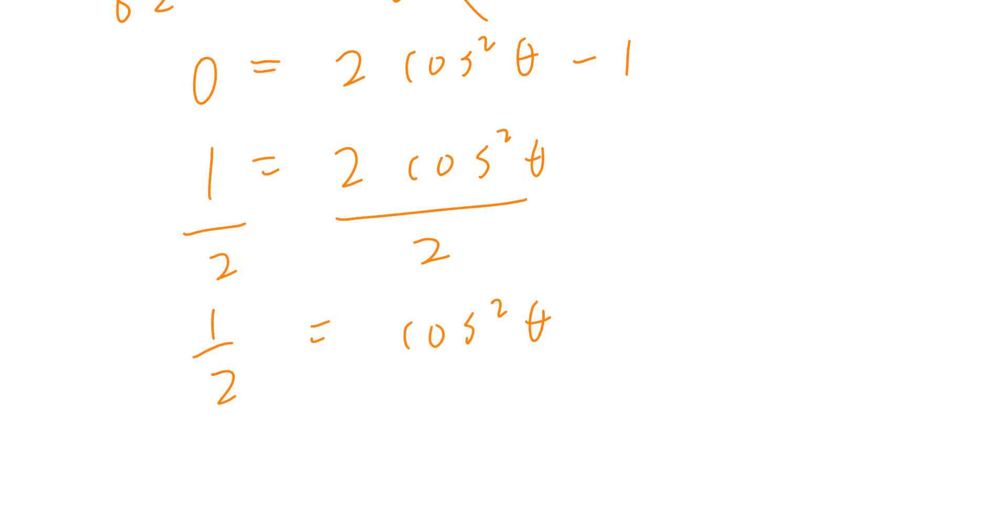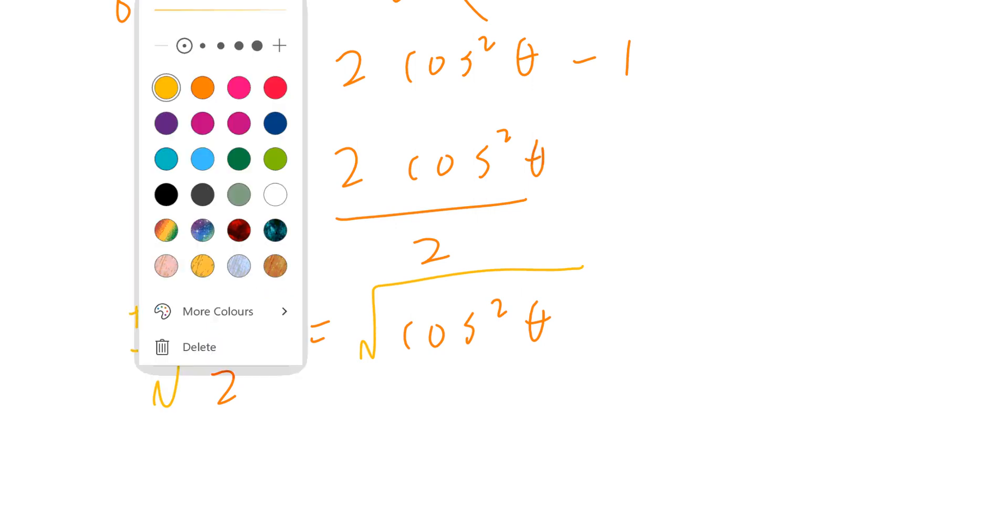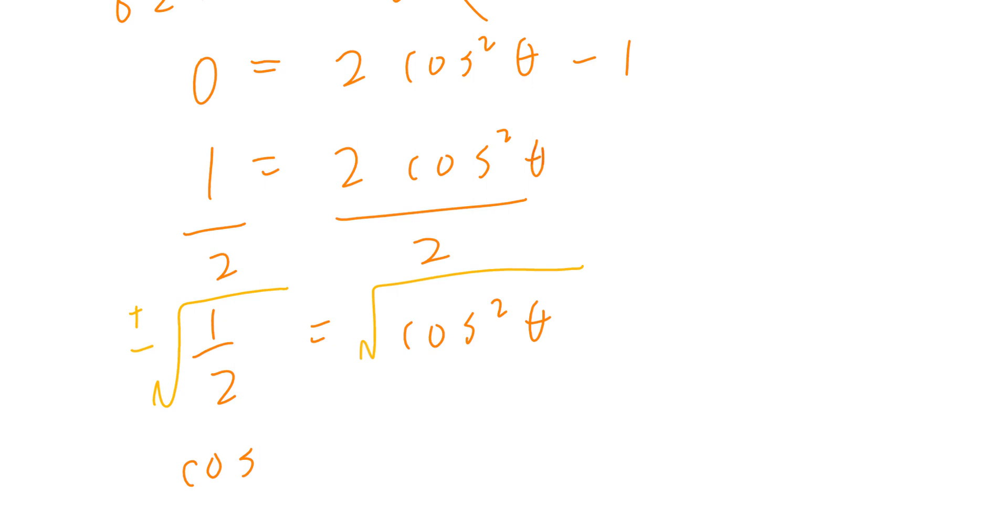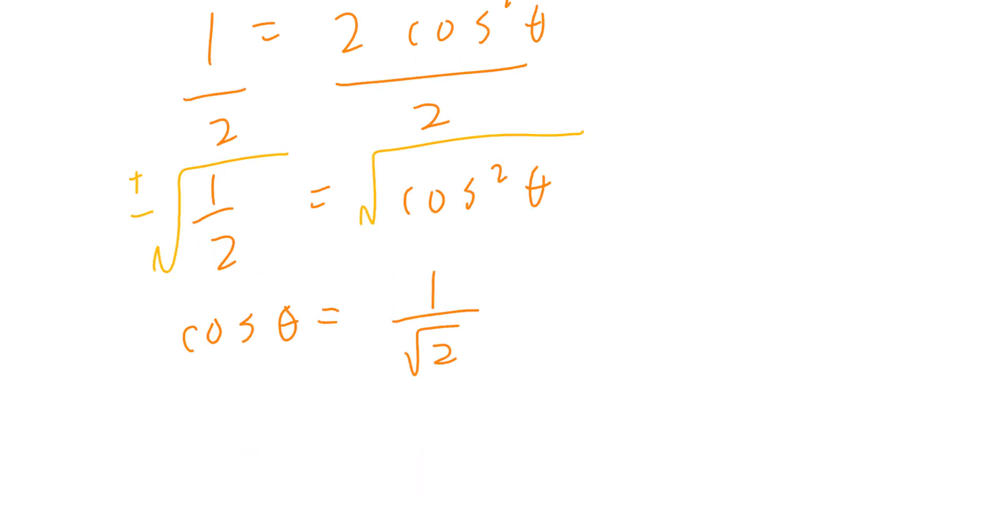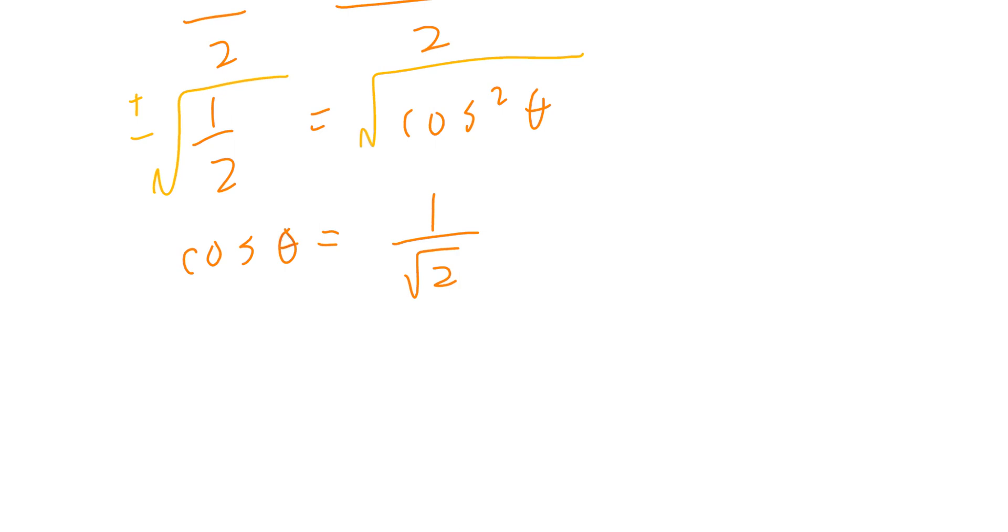The opposite of multiplying by 2 is to divide by 2. So one half equals cos squared theta. Don't forget the opposite of taking the square is to take the square root. There are two cases here. Because we're going through a real problem, we understand angle theta, which is the restriction, should be an acute angle. So we can dismiss the negative case. So cos theta is 1 divided by root 2. You can draw the special triangle: 1, 1, and root 2. This is pi divided by 4. So theta is pi divided by 4.